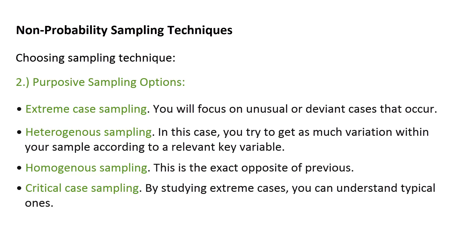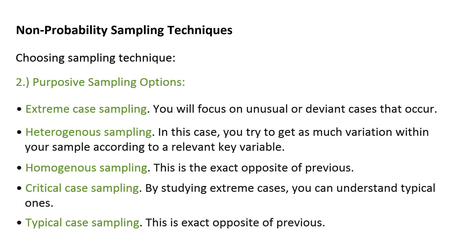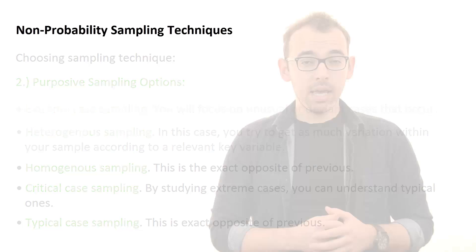Then there is critical case sampling. For example, if you were studying a market failure where 100 companies failed, you would select the ones that failed the most or were most influenced by the failure, so that you can then generalize to less critical cases. On the other hand, typical case sampling is the exact opposite — in that same market failure scenario, you would choose the average case to define and generalize what a typical failure looks like.